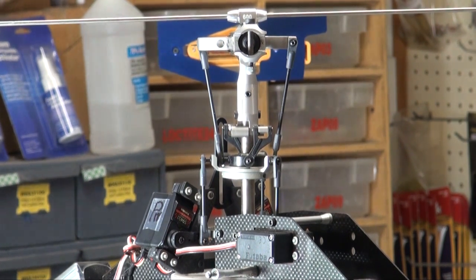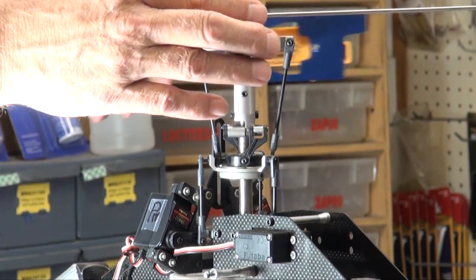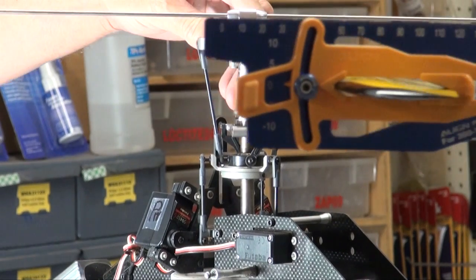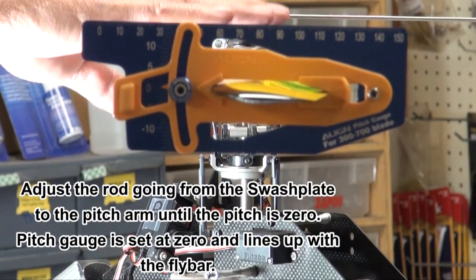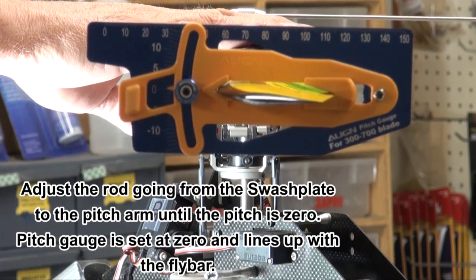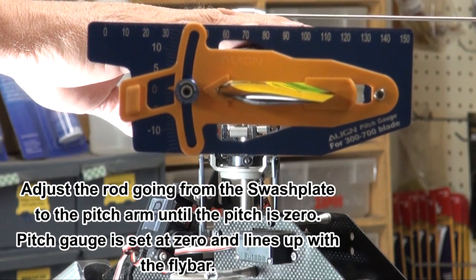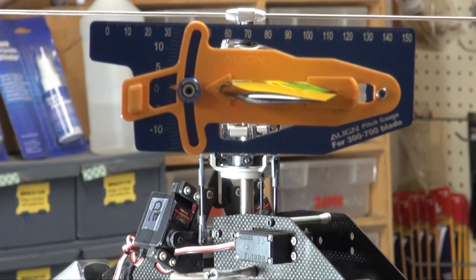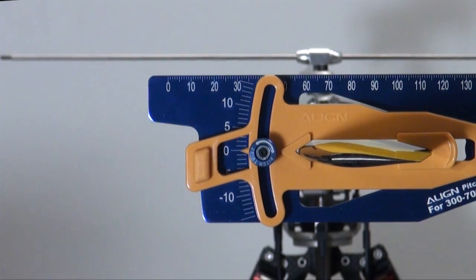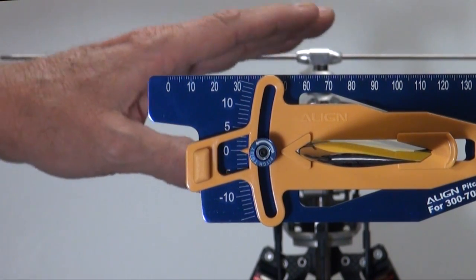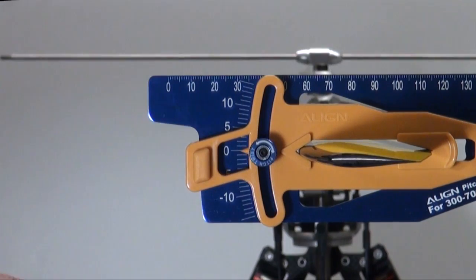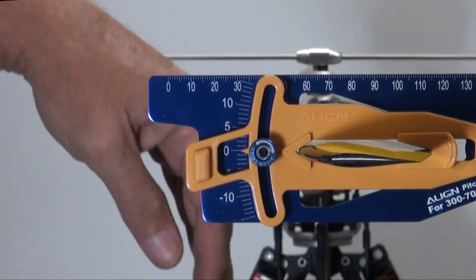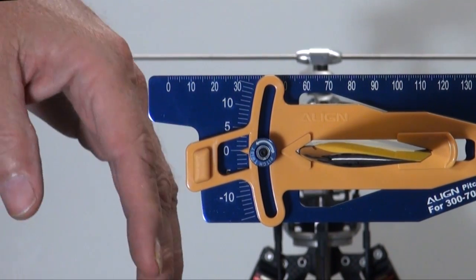Now, now that you have the swash plate level, set one of the blades to zero pitch. Zero pitch. And then you'll work your way through the microbeast setup to step J. For step J, make sure that the blades are lined up with the tail boom. The tail boom and the blades are parallel exactly.